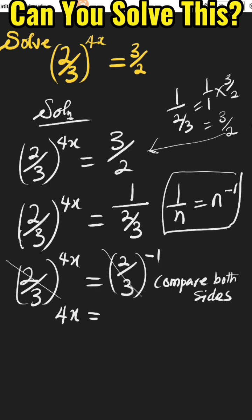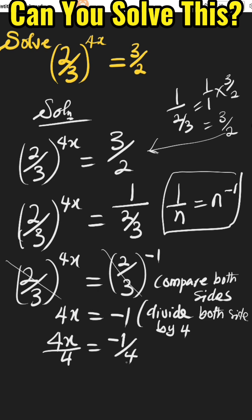Next step, we divide by the coefficient of x, which is 4. When we do that, we have 4x over 4 equals minus 1 over 4. Four cancels four, leaving us with x equal to minus 1/4 as the answer.